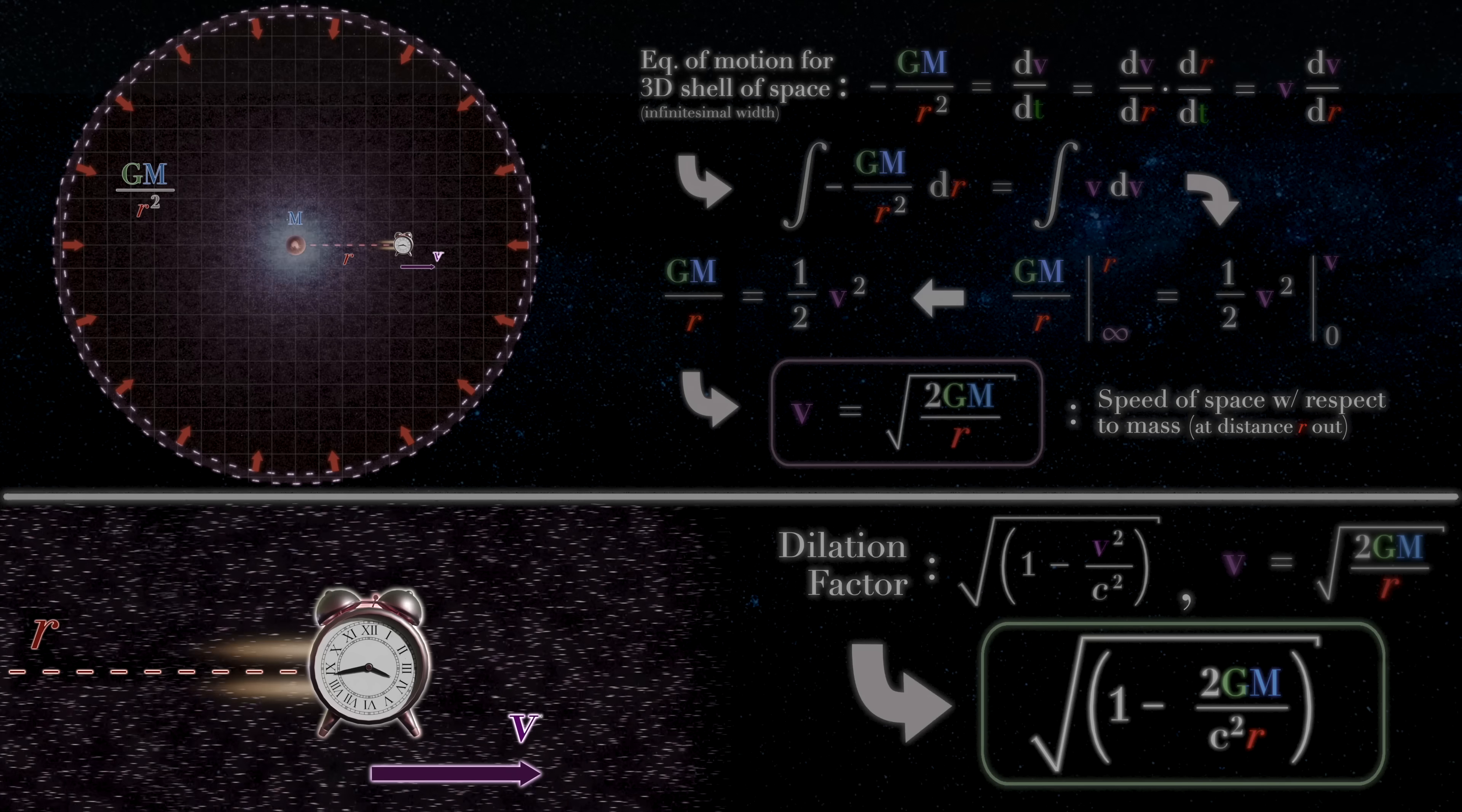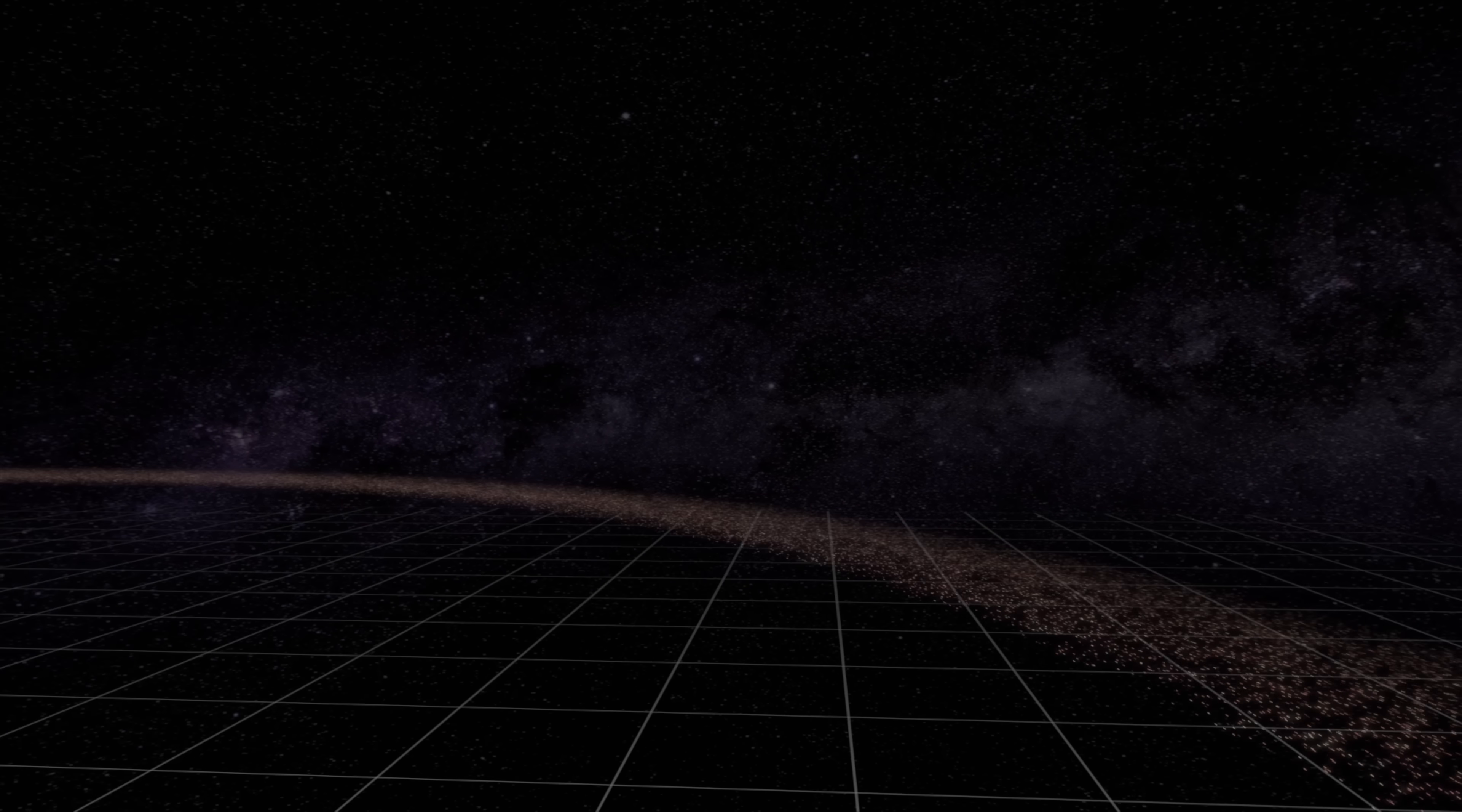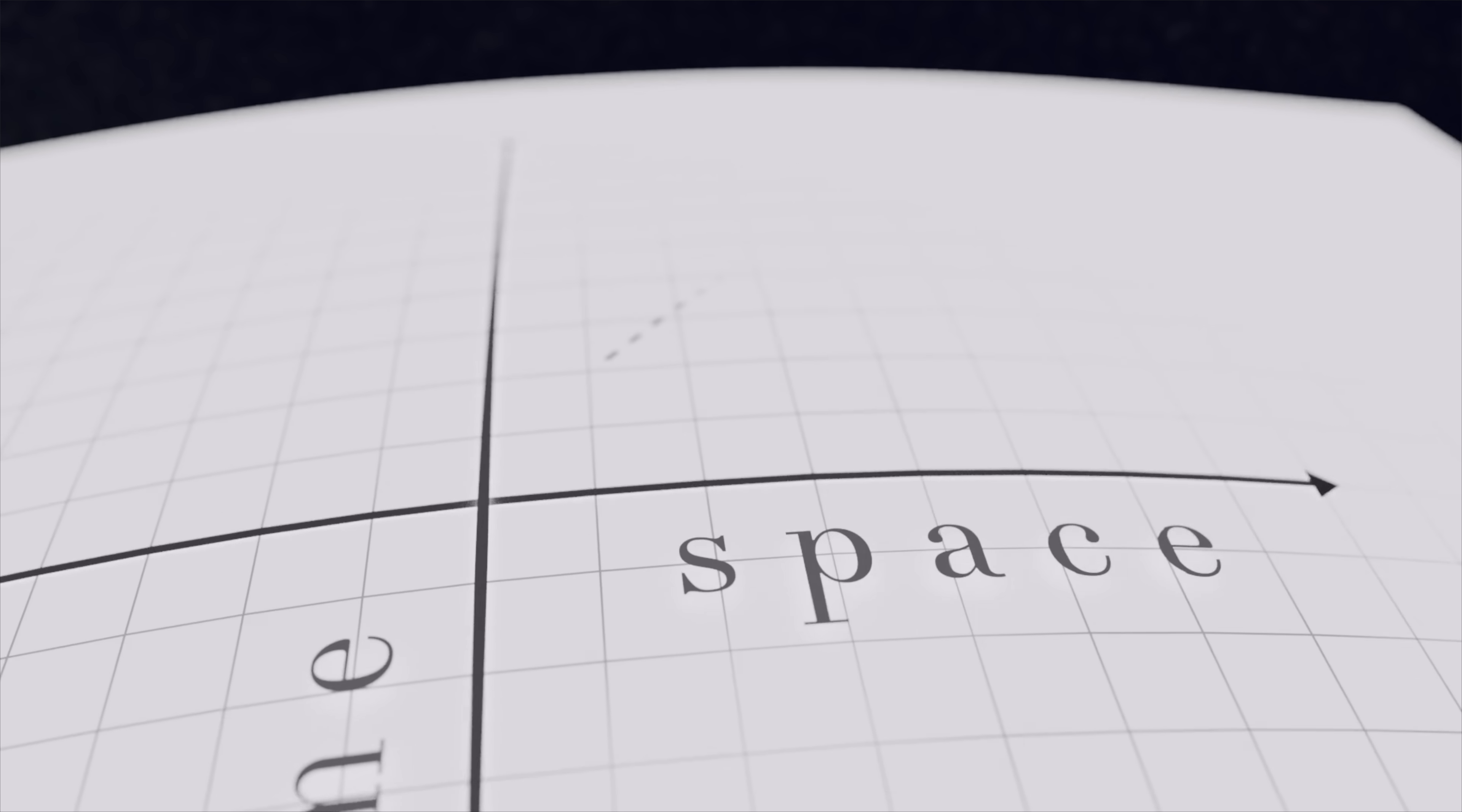Now, hindsight is always 20-20, but let's stop and take a moment to marvel at the incredible fact that it took Einstein and others 10 years to derive an expression that they might have discovered far more swiftly if they'd simply chosen to favor physical intuition over mathematical abstraction. Indeed, notice how we didn't utilize any complicated mathematics to get to our answer. No differential geometry, no four vectors, no tensors, and best of all, absolutely no space-time curvature.